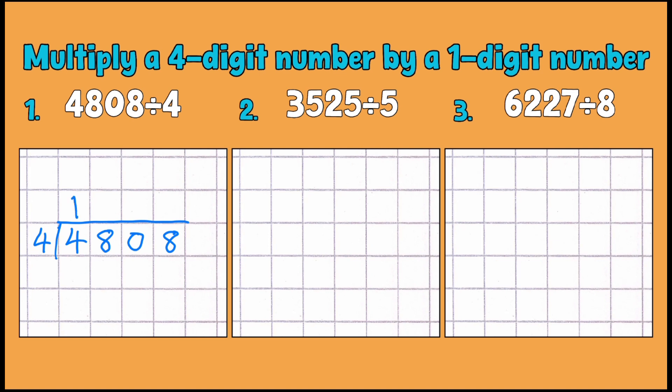How many fours can I fit into 8? Well, two fours are 8. How many fours can I fit in 0? Well, I can't fit any, and if that happens, you just write a zero in there. I've got nothing to carry over to my next number, so fours into 8 is two. My answer is 1,202.